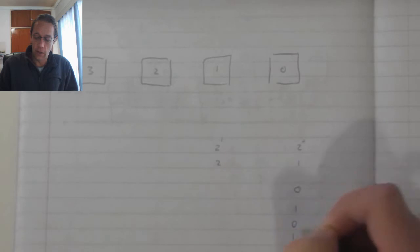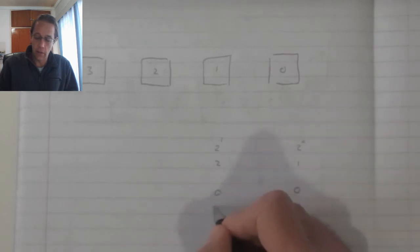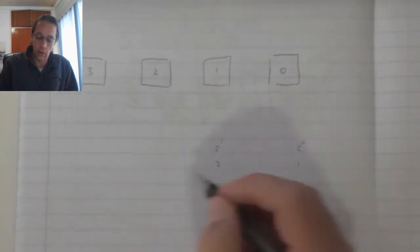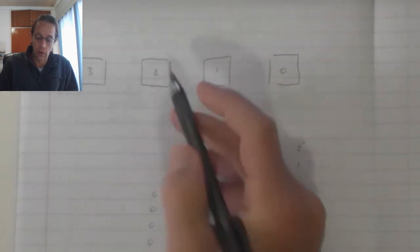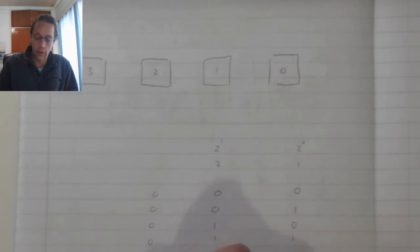0, 1, 0, 1, and then this one is double 0, double 1, and then the third one will be 4 zeros, 2 to the power 2, and then 4 ones.